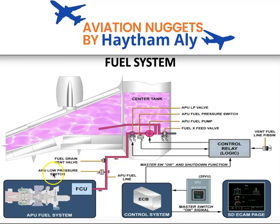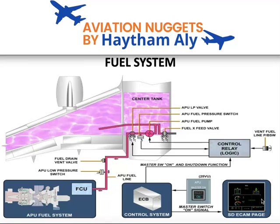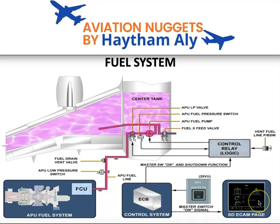What is the function of the APU low pressure switch? This switch will indicate on the ECAM APU page a 'fuel low pressure' message. This message will appear when the APU speed is more than 7% and the pressure of the fuel in the line drops below 15.8 PSI. So when the APU low pressure switch senses less than 15.8 PSI with the APU speed above 7%, it will indicate 'fuel low pressure' on the ECAM APU page.